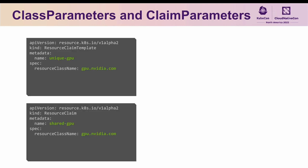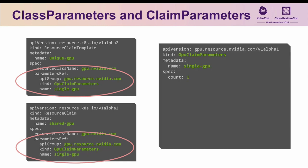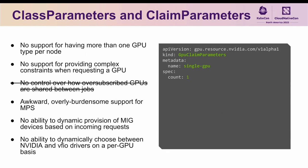So what do these claim parameters look like? Using the examples of the resource claim and resource claim template from before, you can basically just tack on an extra section called parameters ref, which points to an object that the DRA resource driver for your specific resource type knows how to interpret. The simplest claim parameters supported by NVIDIA's DRA driver for GPUs is a CRD called GPU Claim Parameters with a count of how many GPUs you want allocated to the claim — meaning an alternative to our original example of requesting two GPUs injected into a single container could use a claim parameters object declaring two GPUs allocated to the claim, plumbed through the resource claim template.